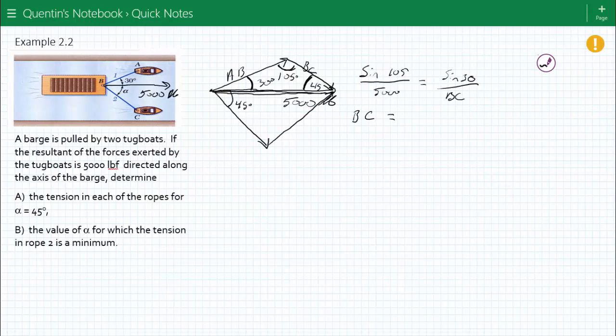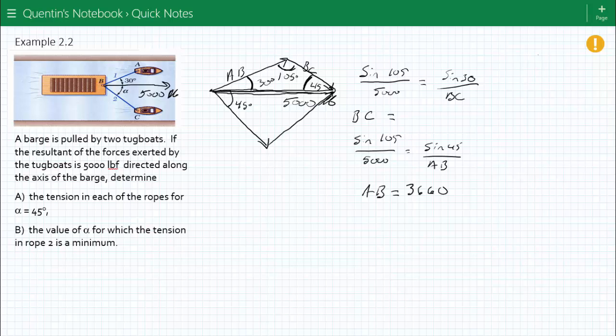It's equal to some number. And then you can do the same thing again. Sine of 105 over 5,000 is equal to sine of 45 over AB. So therefore, AB is equal to 3,660. Whereas BC is equal to 2,590.